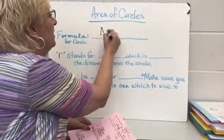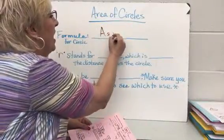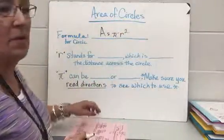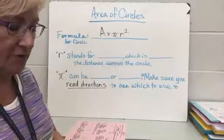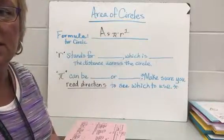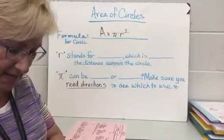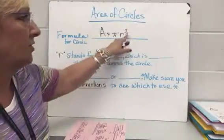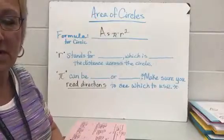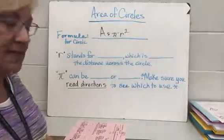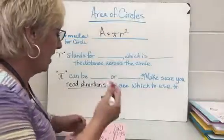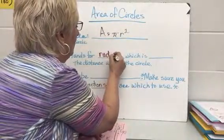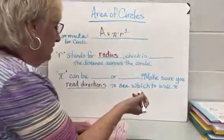The formula is: area is equal to pi r squared. Remember we were talking about mnemonics — for circumference it was 'cherry pies are delicious,' and the next one is going to be 'apple pies are two.' That's a good way to remember these formulas.